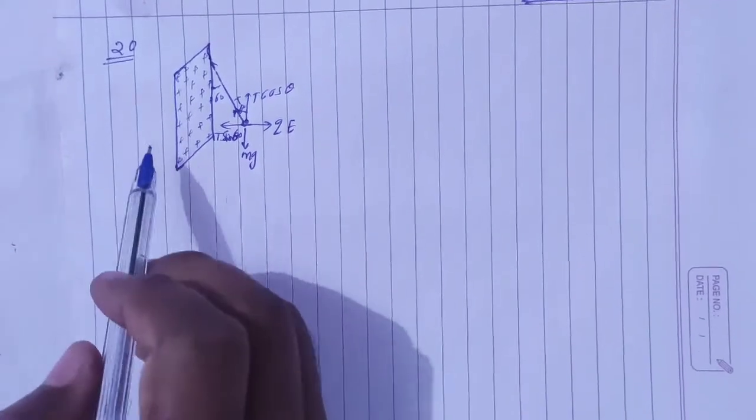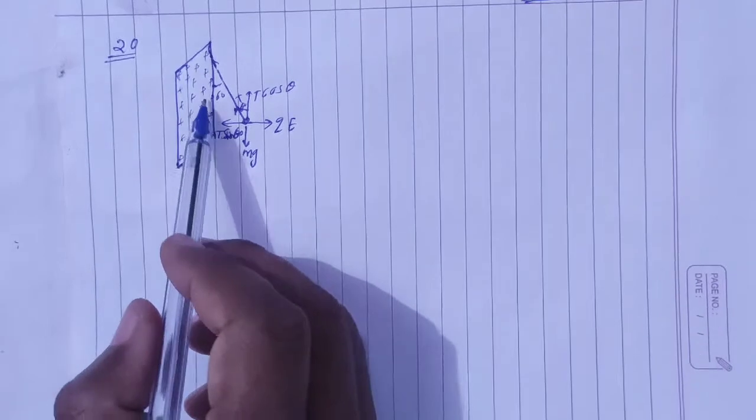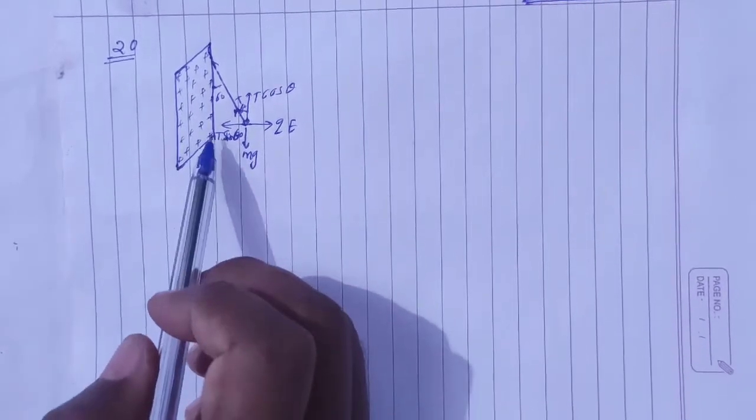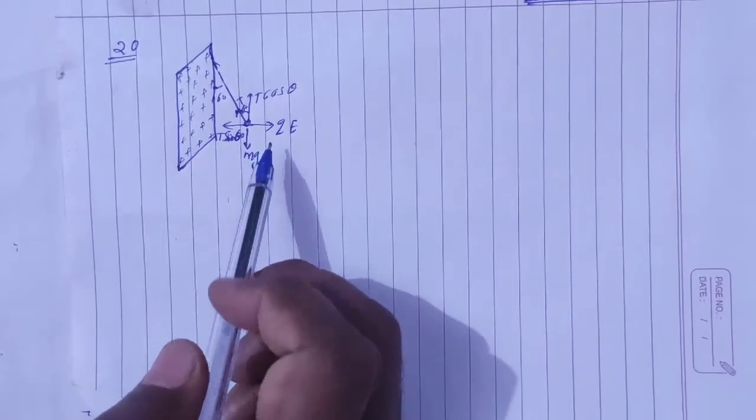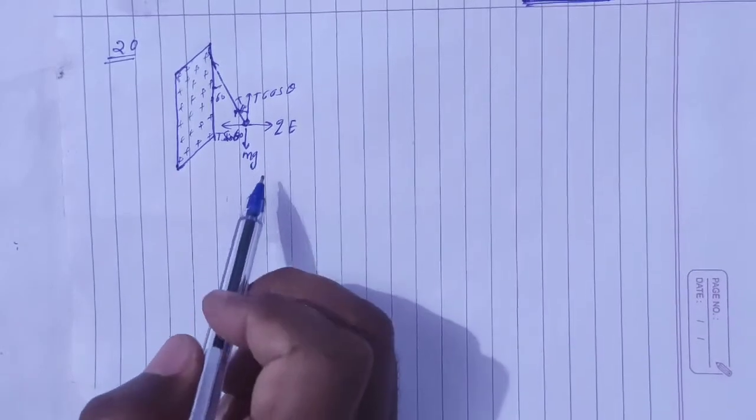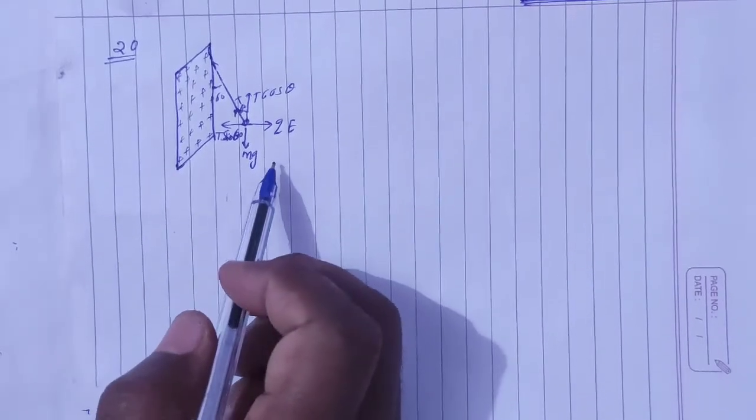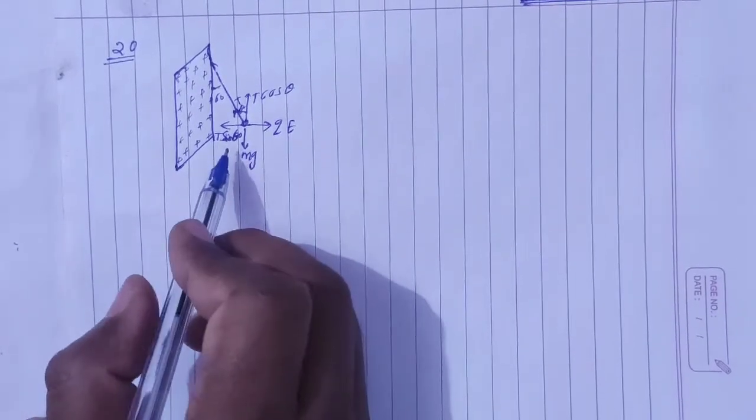So this is Question No. 19 and 18 continuation. Question No. 18 and 19, we have seen the electric field. So this is the surface charge density. This question is what we have said.